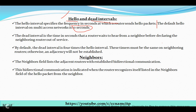After the dead interval elapses without hearing any update from a neighbor router, the router considers that route or path as out of service. By default, the dead interval is four times the hello interval — so if the hello interval is 10 seconds, the dead interval is 40 seconds. These timers must be the same on neighboring routers; otherwise, adjacency will not be established.